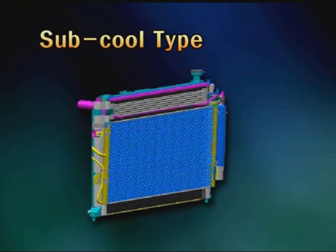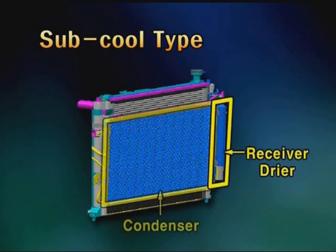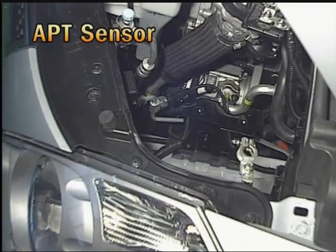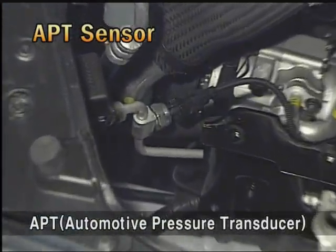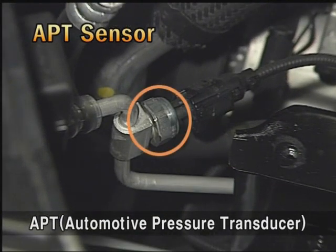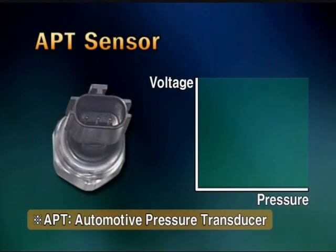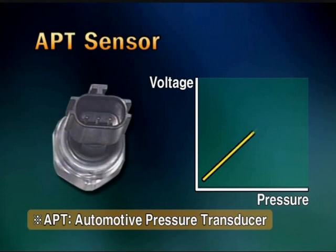The condenser is integrated with the receiver dryer, so it is the sub-cool type, of which performance is superior to the conventional one. The APT sensor for detecting refrigerant pressure is installed at the high-pressure pipeline linking between the condenser and evaporator. This is made of a semiconductor piezo element and has proportional characteristics in which the output voltage is increased as the coolant pressure is increased.